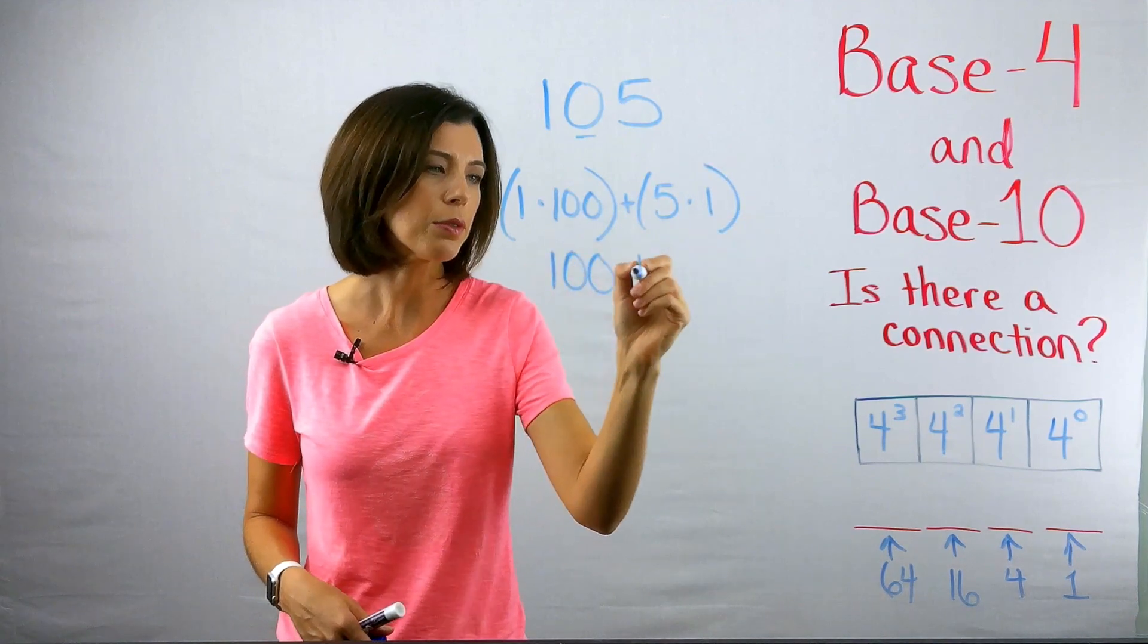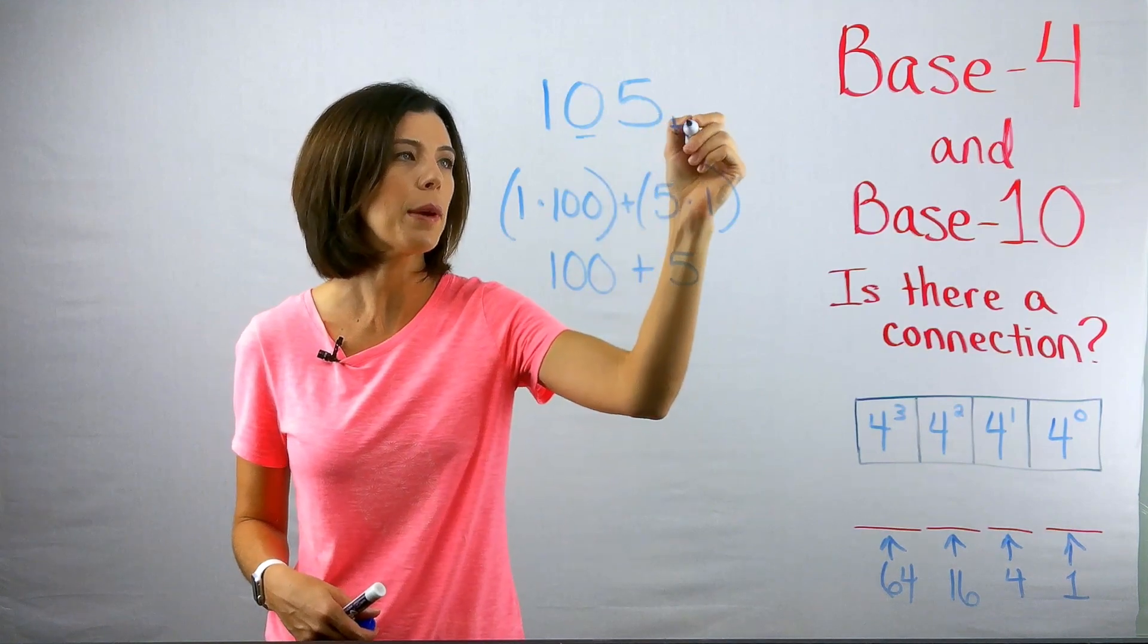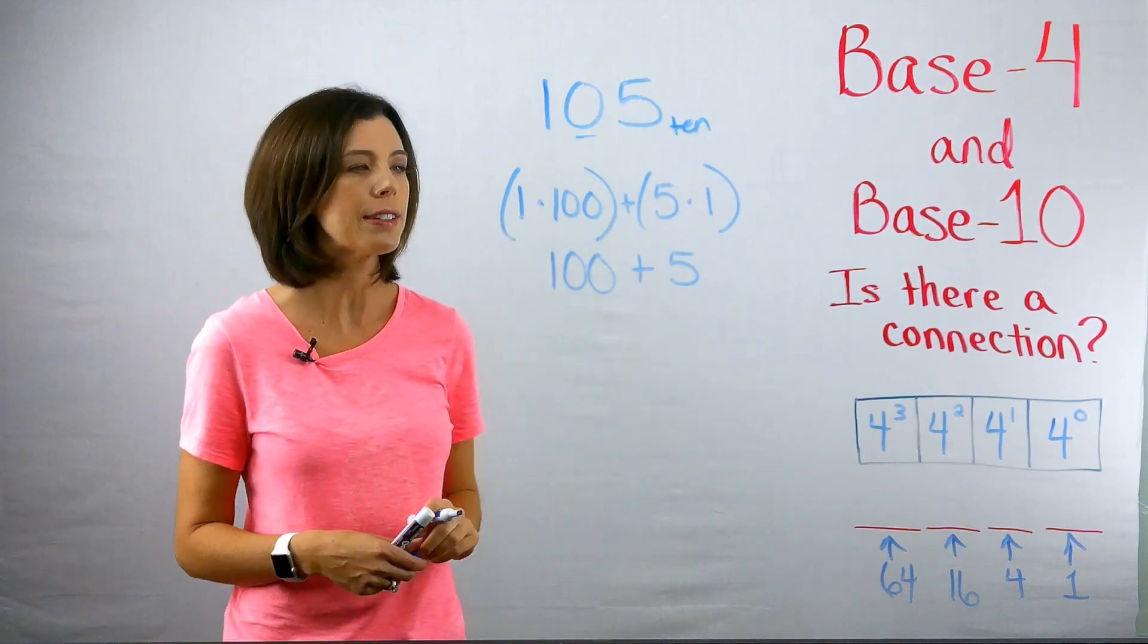Mathematically, it's correct. 100 plus five still gives me 105. By the way, I'm operating in base 10 right now when I'm thinking about this.